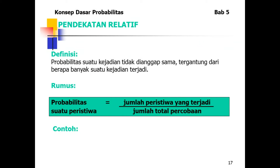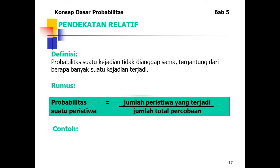Pendekatan relatif: probabilitas suatu kejadian tidak dianggap sama, tergantung dari berapa banyak suatu kejadian terjadi. Rumusnya: probabilitas suatu peristiwa = jumlah peristiwa yang terjadi dibagi jumlah total percobaan. Teorema Bayes merupakan probabilitas bersama suatu kejadian yang terjadi setelah kejadian lain ada.